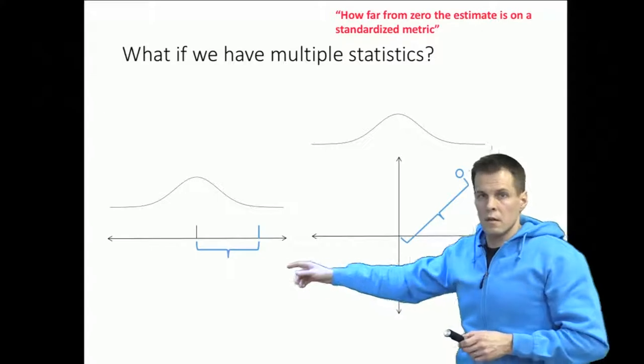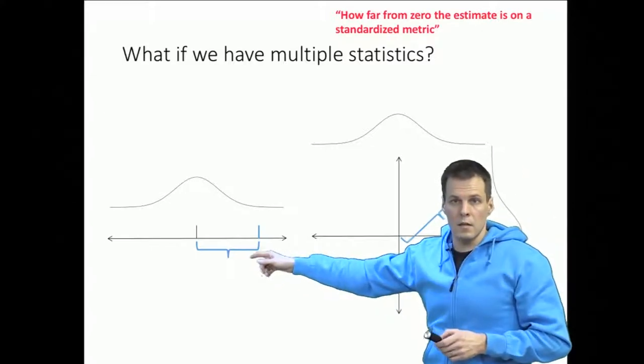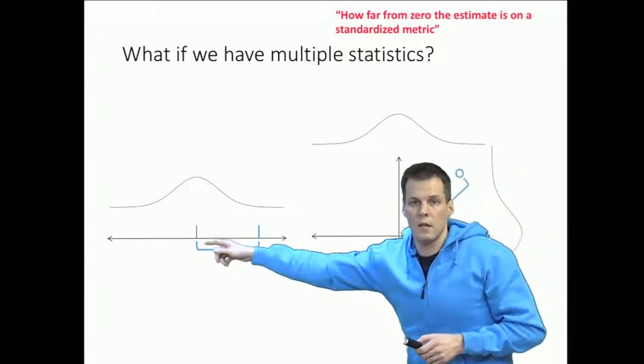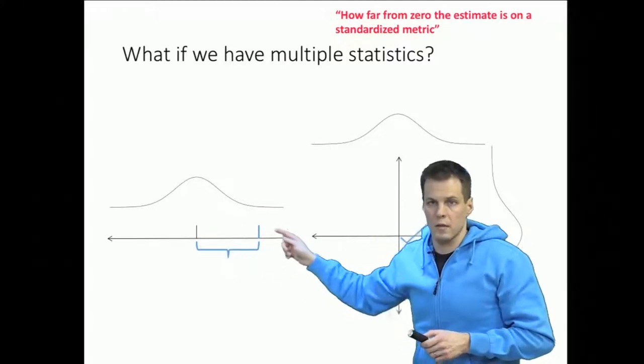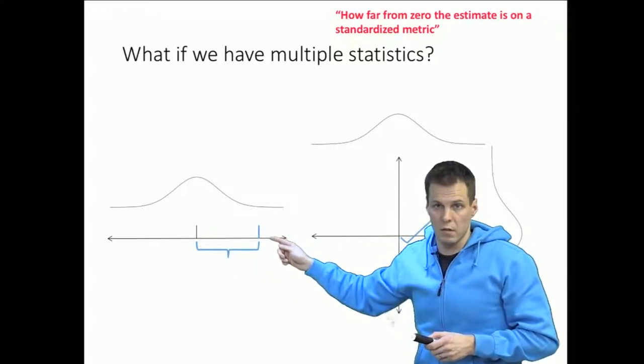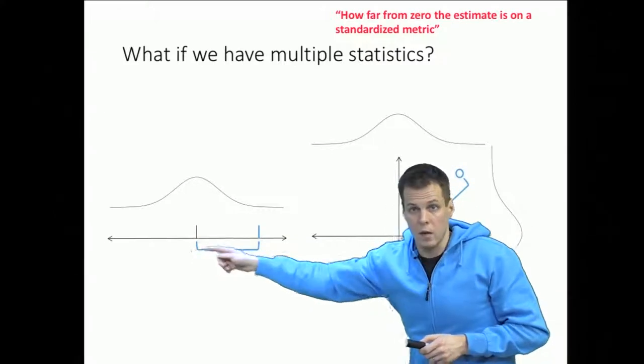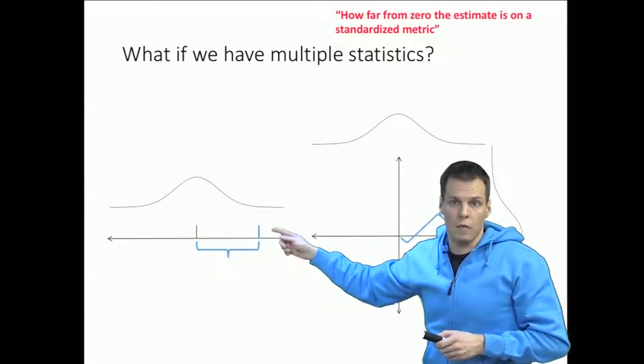So in t and z tests we basically assess how far from the zero point the actual estimate is on a standardized metric. So we have a line and we go along that line see how far we get.